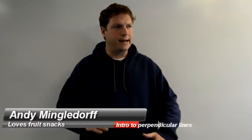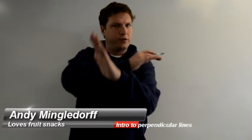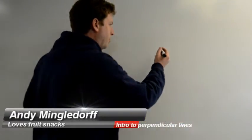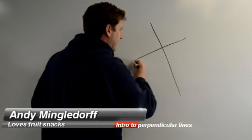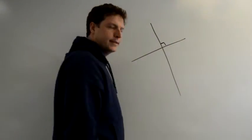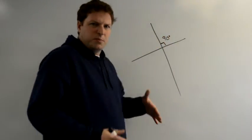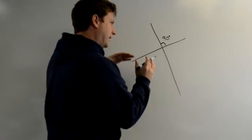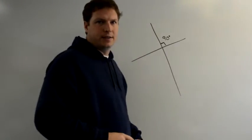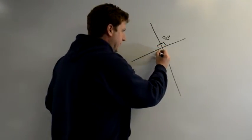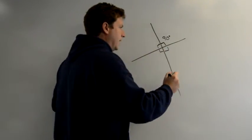Perpendicular lines form this perfect intersection and what do I mean by perfect is a 90 degree angle. So it's almost like a box right, it's like a perfect X every single time. Every angle will be 90 degrees and...